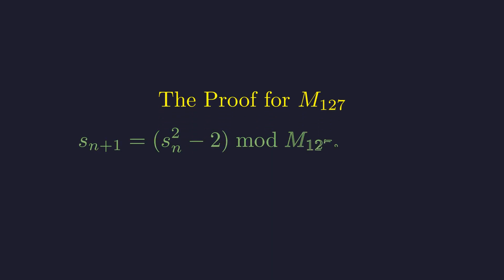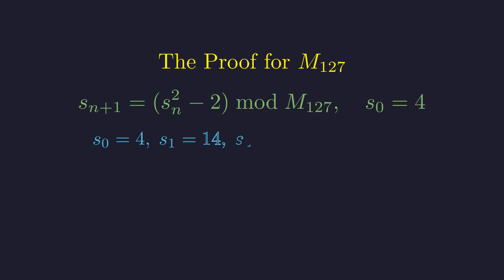The rule is the same. Start with 4, then repeatedly square, subtract 2, and find the remainder when dividing by our 39-digit number, m of 127. The first few steps are simple enough for anyone to do on paper.